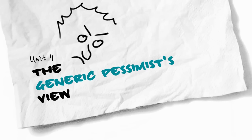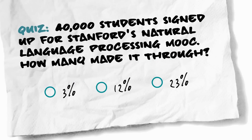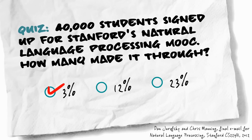But that's just the optimist view. Here's a quiz to illustrate one of the major issues: this year, 40,000 students took a massive open course by Stanford on natural language processing. How many actually made it through the course? It's 3%. Björn is actually a professor — imagine having only 3% of your students pass.